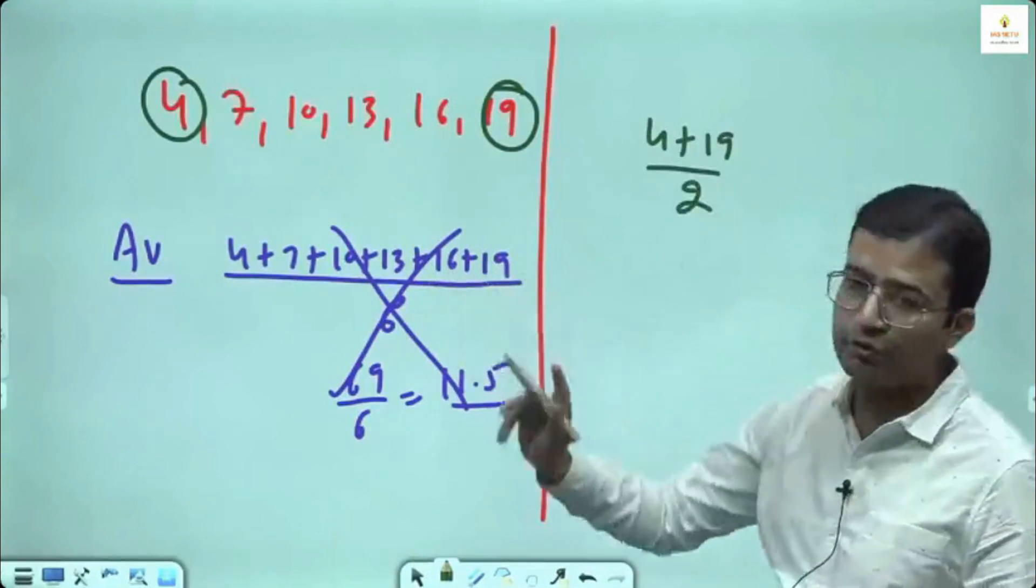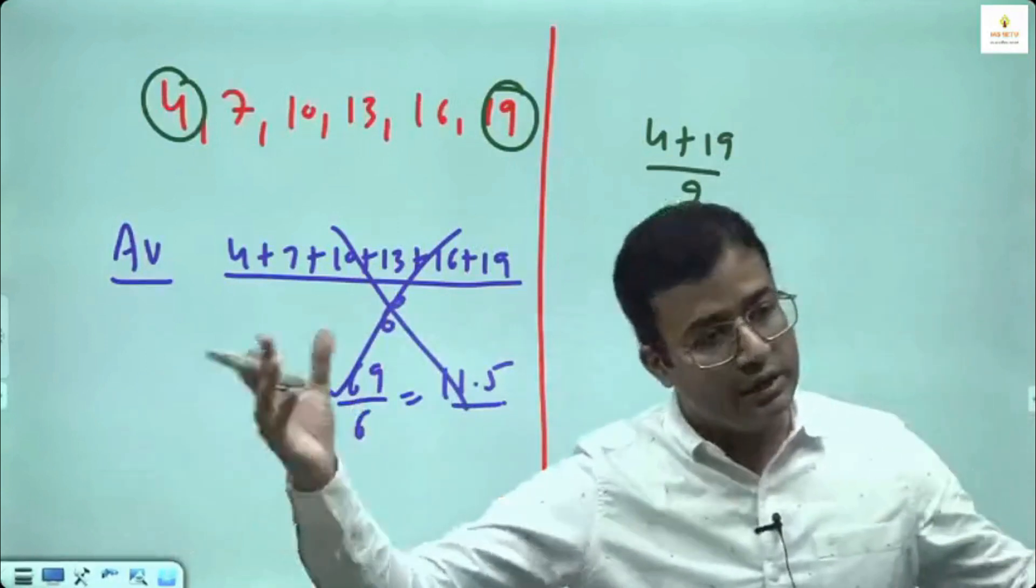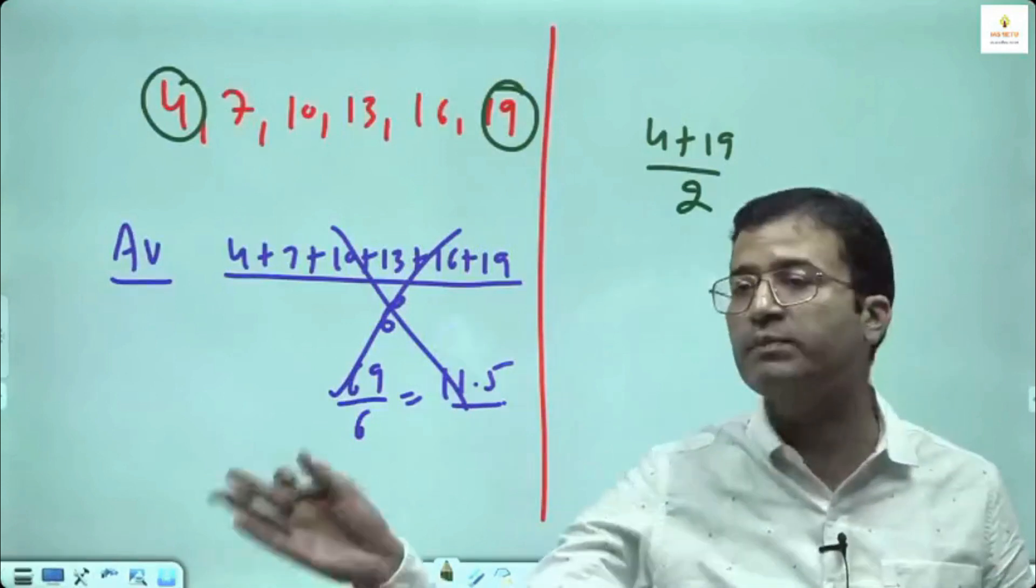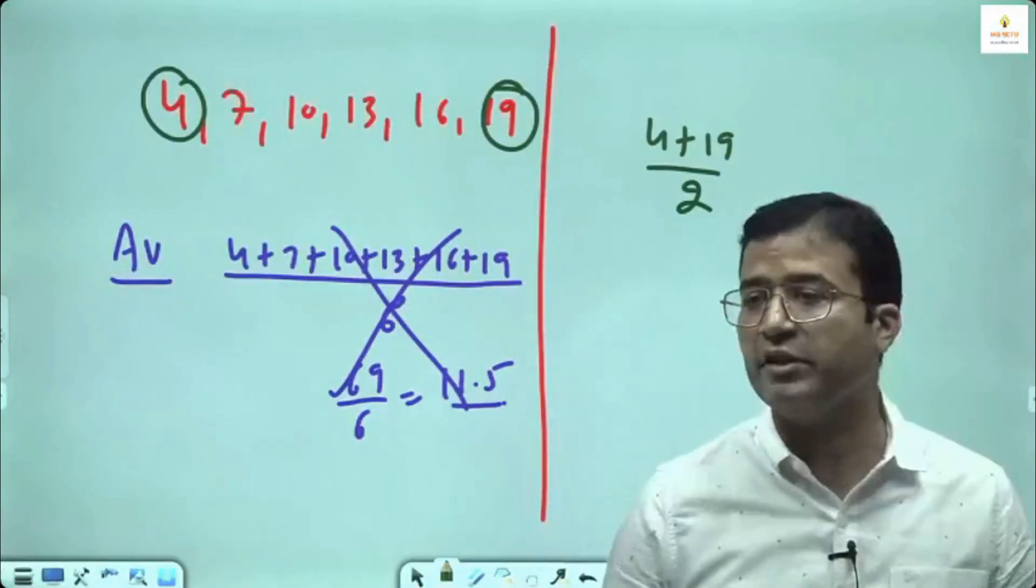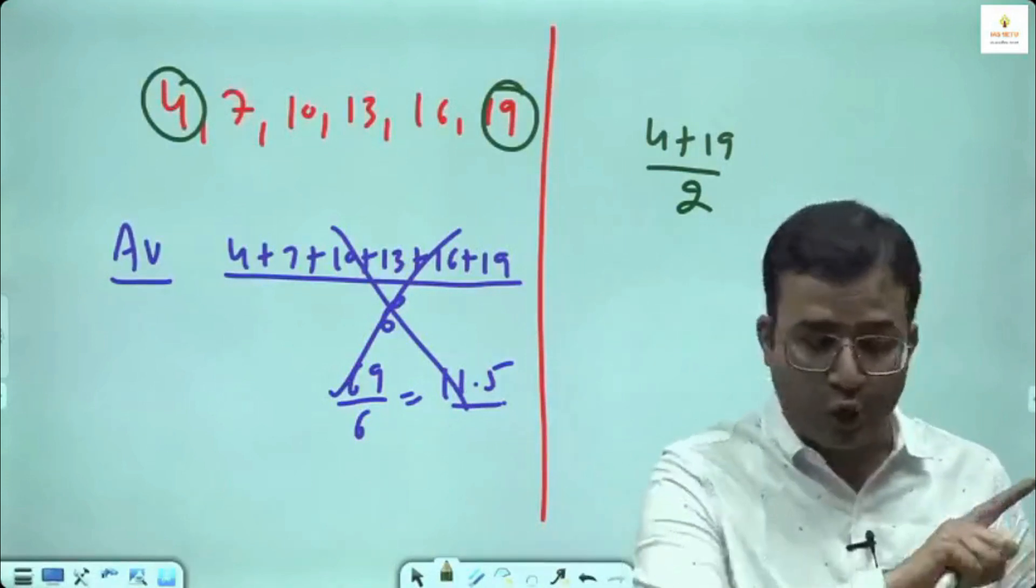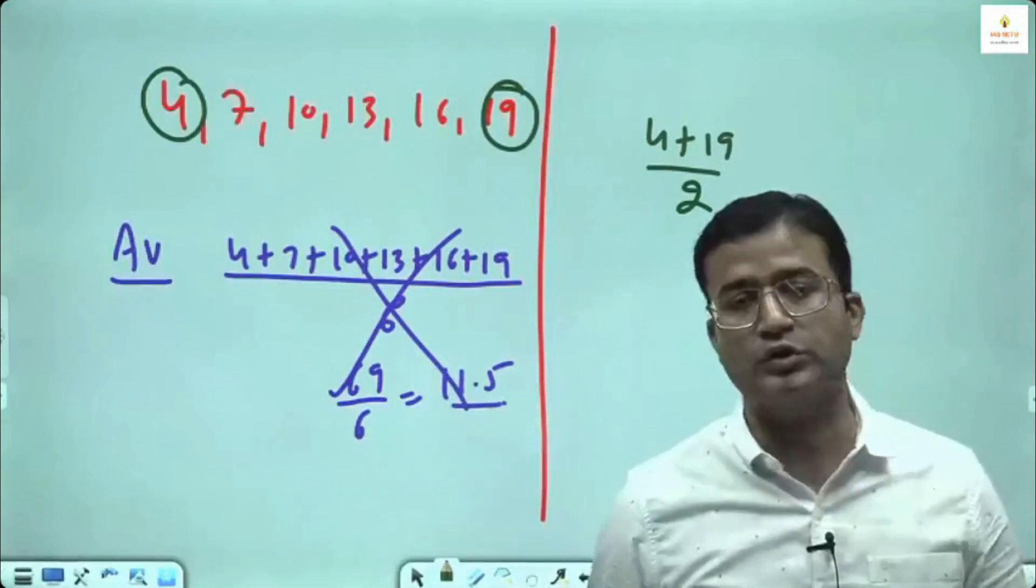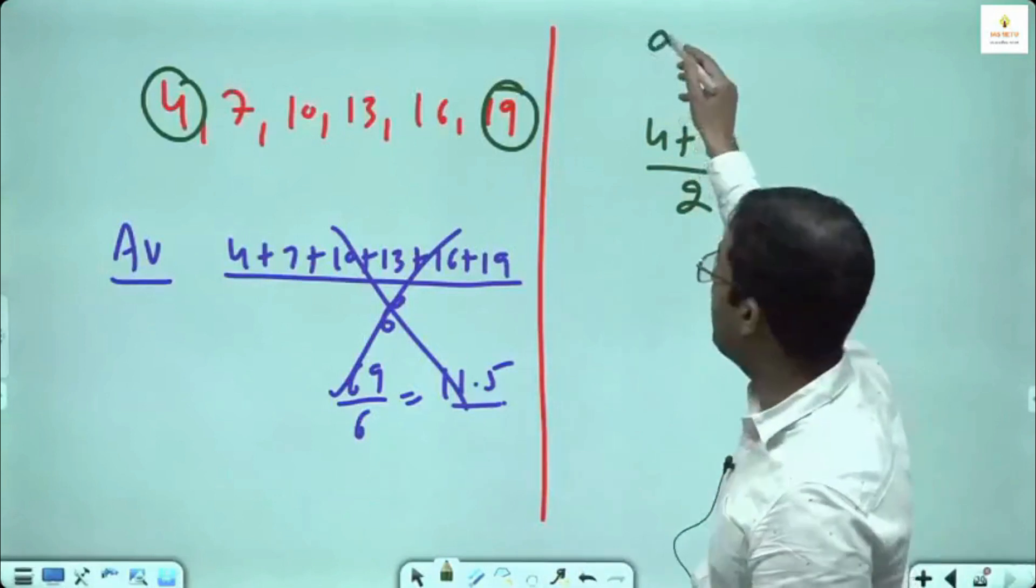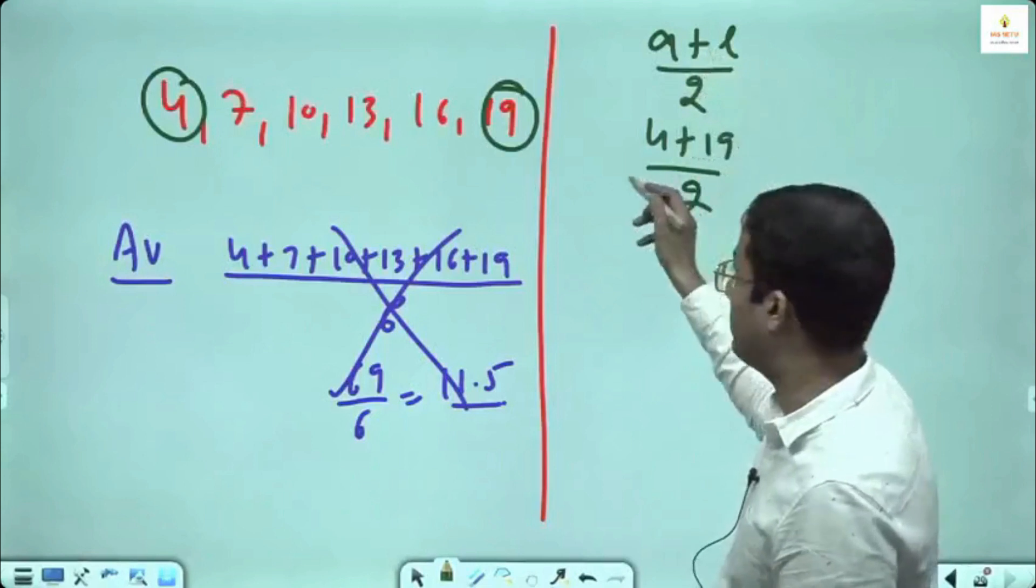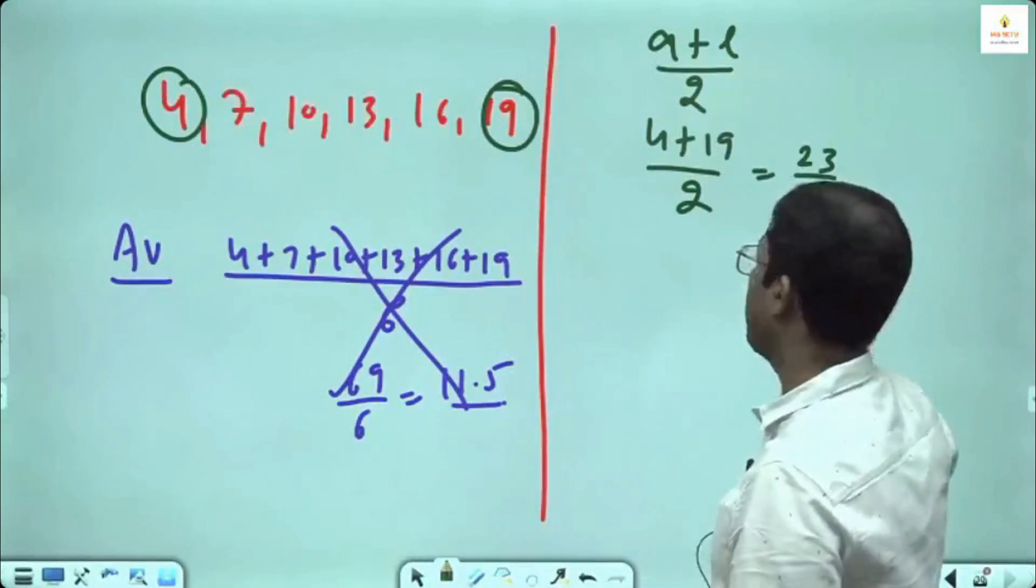There is one blessing to AP. Either you take total divided by number of terms, otherwise there is an alternate way to find the average: first term and the last term divided by 2 also gives the same average. First term plus last term divided by 2, you can check 23 divided by 2 is 11.5.